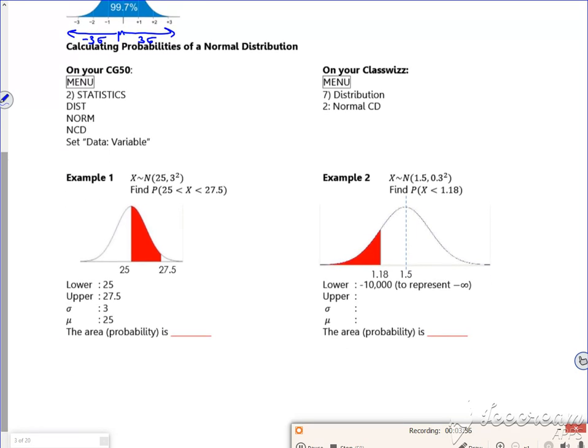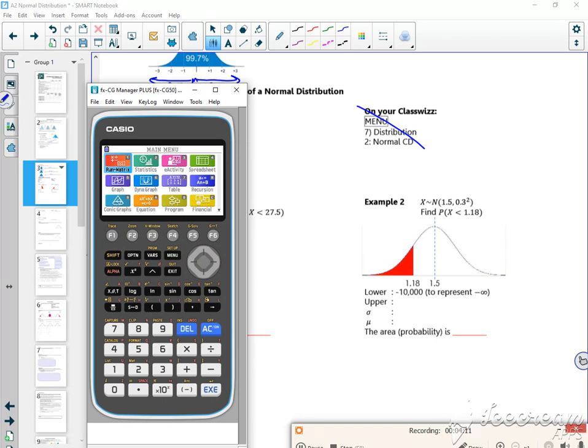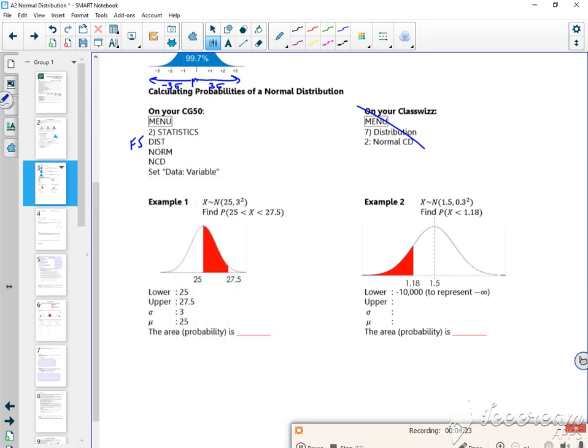So the same idea as when we did binomial: if I do stats F5 for distribution, I've now got normal. Let's have a look and see if it's B, C, D, and inverse as well. There, so F1. There. Then NCD would be F1, and that would be for equals.